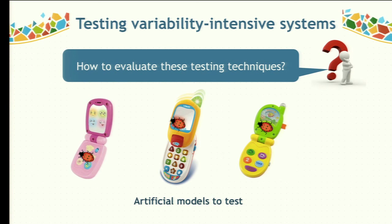Another important problem is how to evaluate these testing techniques. The number of contributions to alleviate the testing process is growing rapidly, but it's hard to find real variability-intensive systems with available code, good documentation, fault reports, and so on to evaluate these techniques. As a result, many authors in academic and industrial contexts use artificial software and artificial faults to simulate the evaluation.